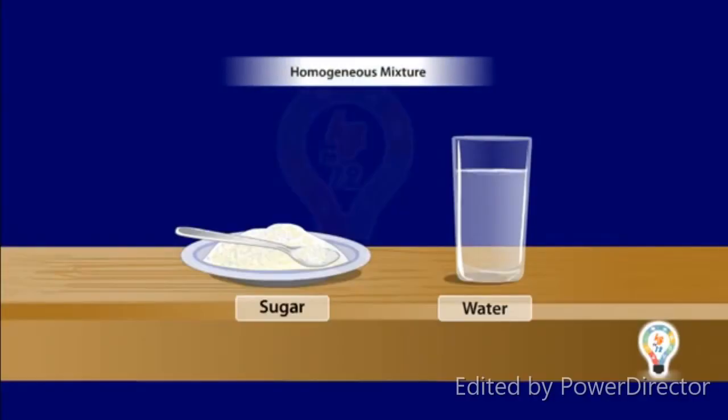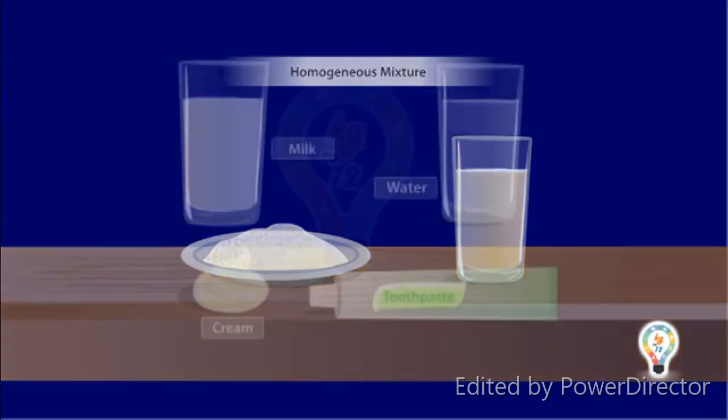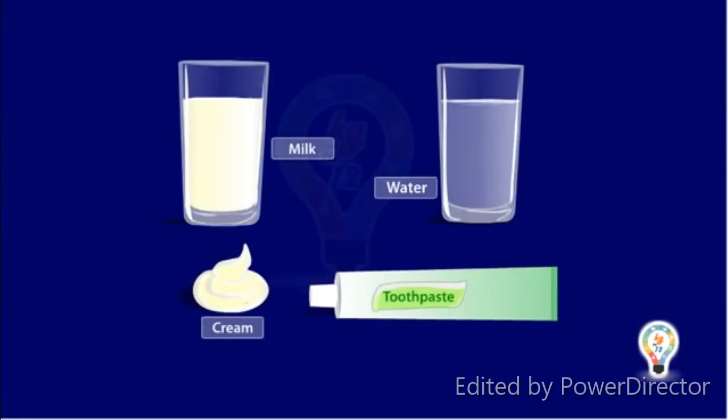Homogeneous mixture is a mixture whose components are soluble in each other. For example, when sugar is added to water, it dissolves in water completely and we cannot see sugar particles in water. Other such example is milk which contains water and cream.